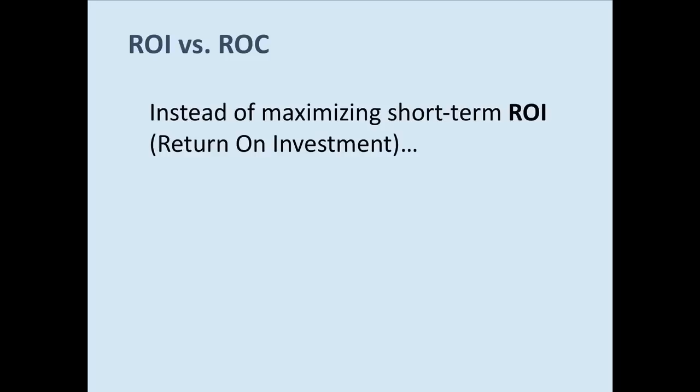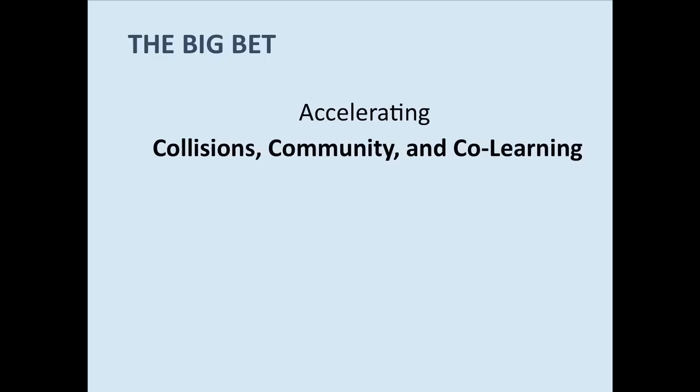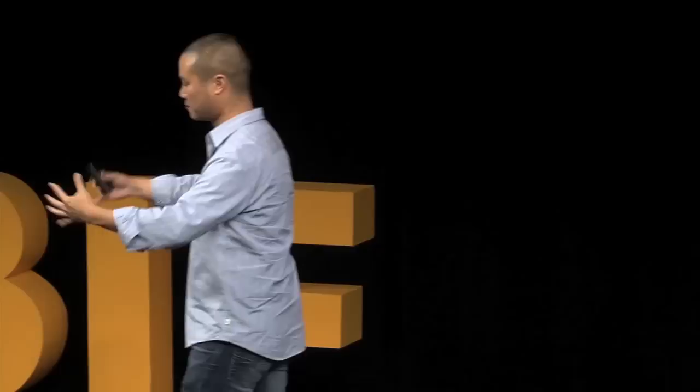Our whole philosophy is rather than focus on the short-term ROI that a lot of land and building developers focus on, really let's focus on ROC, meaning return on community. The big bet that we're making is for Downtown Project, we have our own three C's. It's about accelerating collisions, accelerating community, and accelerating co-learning. And the big bet, it's not even really a bet because there's a lot of research from different places that we've collated together that's really proven that this actually already works. It's just never really been combined at a city level. By combining those three C's, that's going to lead to happiness, more luckiness, and ultimately innovation and productivity increases.